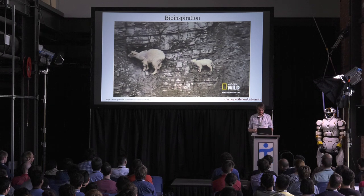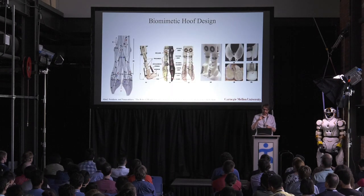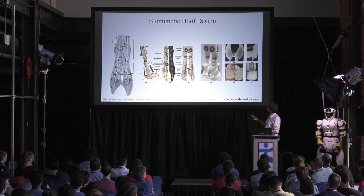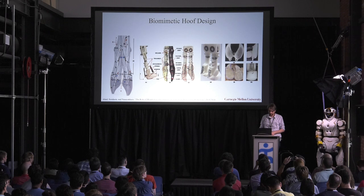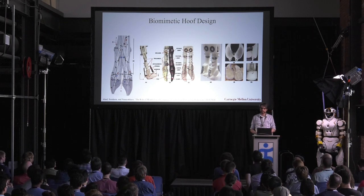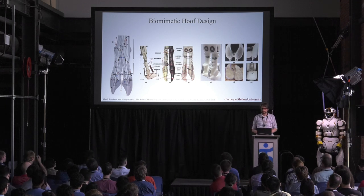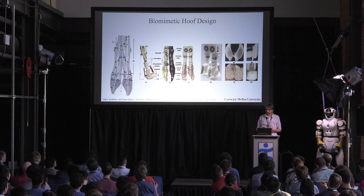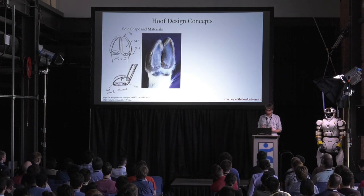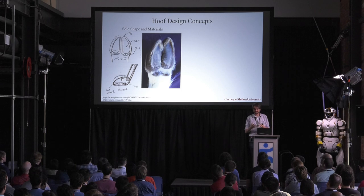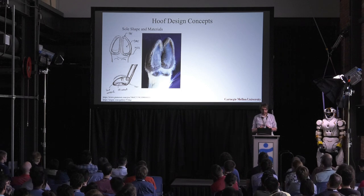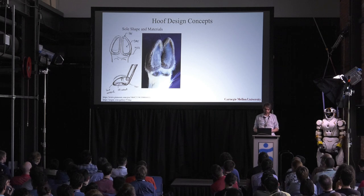Looking at the goat's foot, we don't want to recreate it exactly. Prior work tried to recreate each bone and spring — one paper has eight separate springs — which does a great job matching physiology but is a very complicated design. It likely won't be robust when smacked against a rock while jumping. Instead, we want to pull out the underlying design principles and apply them more simply.